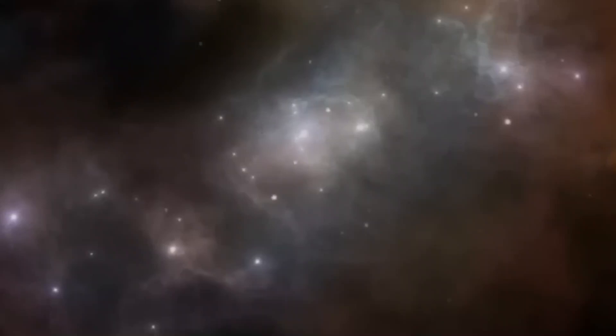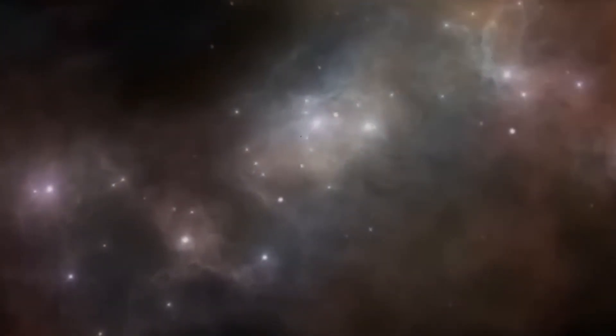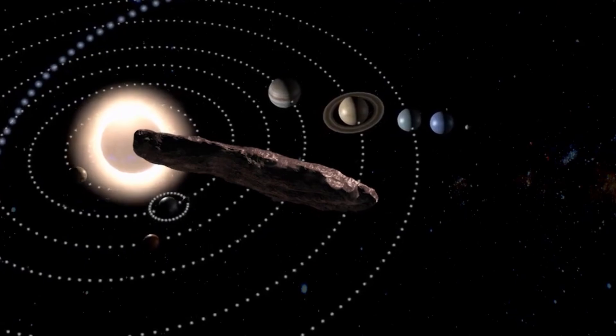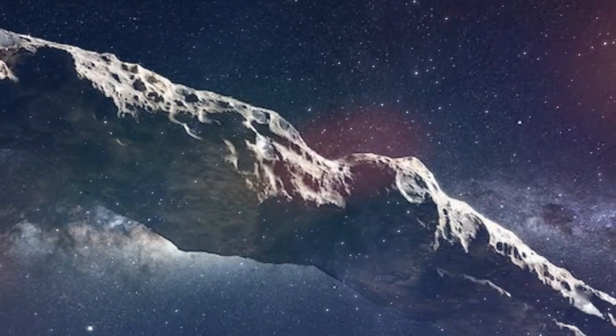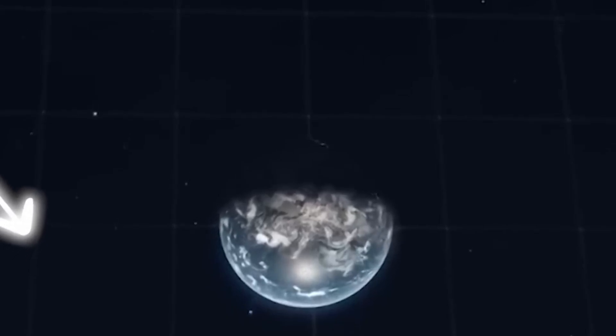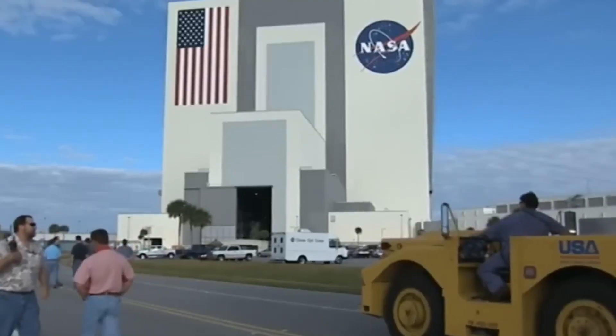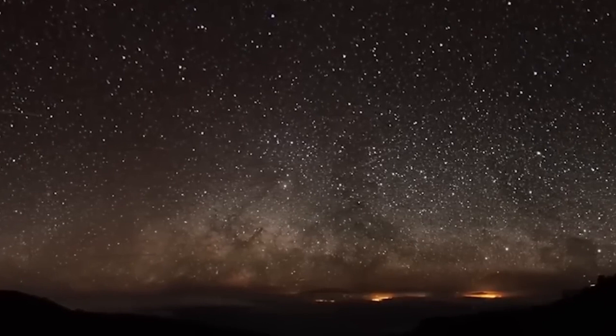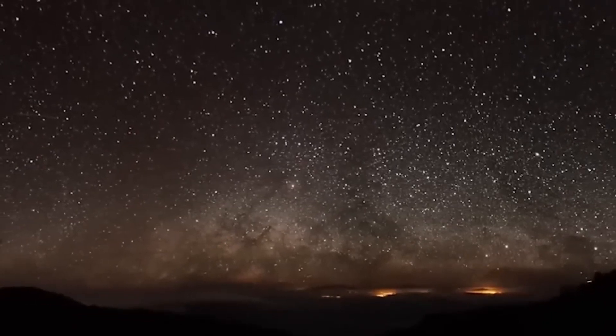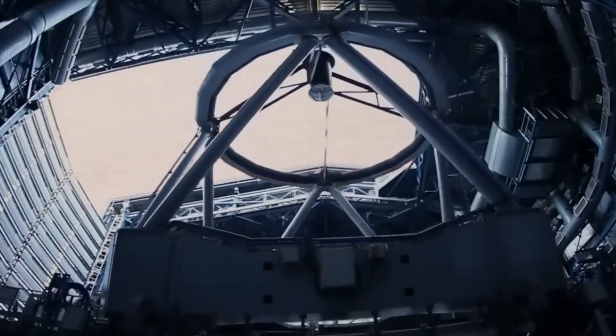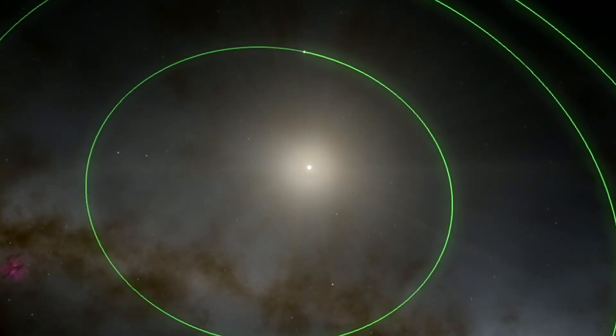The JWST's advanced infrared capabilities can provide detailed data from great distances, potentially uncovering more about Oumuamua's nature and origins. The encounter with Oumuamua remains one of the most intriguing astronomical events in recent history. It challenged our understanding of the universe and opened new avenues for exploration and study. With the JWST poised to provide more insights, the scientific community eagerly anticipates further discoveries about this mysterious interstellar visitor. What do you think? Is the James Webb Space Telescope truly up to the task of unraveling the secrets of Oumuamua?